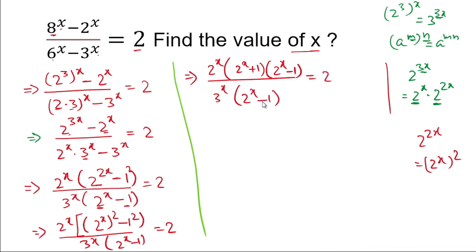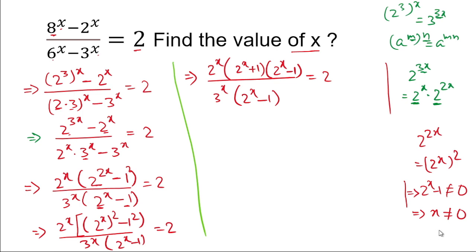Note that the factor (2 to the power x minus 1) must not equal zero, which means x should not equal 0, since substituting x=0 gives 1 minus 1 equals 0. So we have established that x ≠ 0.